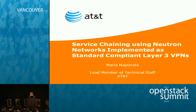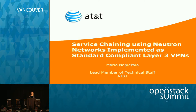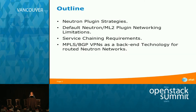My name is Mariana Perala, I am from AT&T Mobility. Today I'm going to talk about how to do service chaining using neural networks implemented as Layer 3 VPNs. There's going to be no code, no demo — it's a theoretical presentation, but it's a reality now. It's actually happening right now and being used in production. The outline covers neutron plugin strategies, networking limitations in default neutron ML2, service chaining requirements, and how MPLS BGP VPNs can implement service chains.